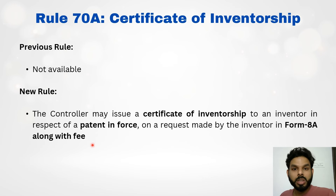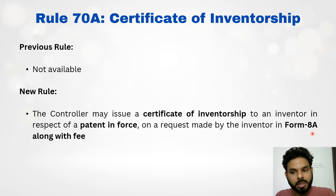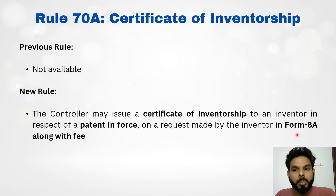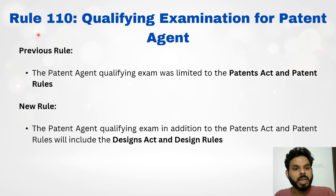Earlier, there was no such provision for inventors — the patent certificate was mostly for the applicant. Now, inventors can also get a certificate. If they wish to receive it, they have to file Form 8a — a new form introduced by the patent amendment rules — along with the prescribed fees. This is available for a patent that is in force, and upon filing, the inventor can receive a certificate of inventorship from the patent office.